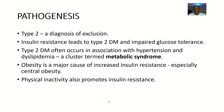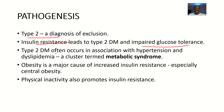Looking at the pathogenesis of type 2 diabetes mellitus: insulin is not being produced in sufficient amounts, and the insulin that is produced faces resistance. Type 2 is a diagnosis of exclusion. There is insulin resistance leading to type 2 diabetes mellitus and impaired glucose tolerance. Type 2 often occurs in association with hypertension and dyslipidemia — a cluster known as metabolic syndrome. Obesity, especially central obesity, is a major cause of increased insulin resistance.